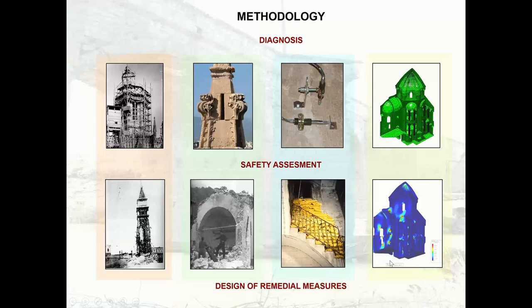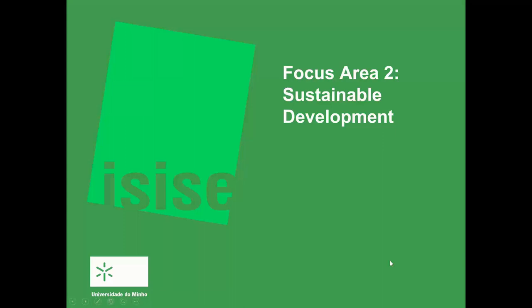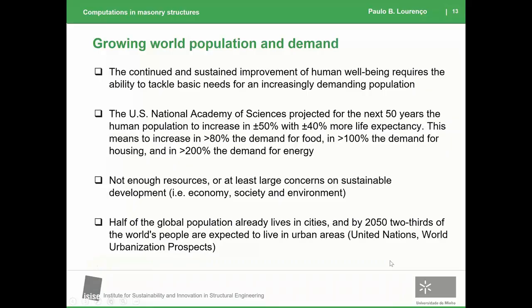For this, there is a proper methodology which, independently of whether it is cultural heritage or not, always involves understanding the past of the building, some survey, some inspection, and some modeling. The modeling is fundamental in the process of reaching a decision on the safety of the building, and this is what we'll be talking about — how to model these buildings. The second focus area is the needs of the world population. Some estimates from the US National Academy of Sciences expect that in the next 50 years we will build as much as we built in the last 10,000.